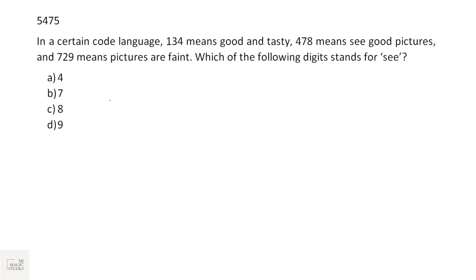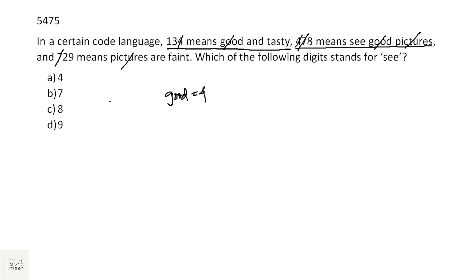In a certain code language, 1-3-4 means 'good and tasty', 4-7-8 means 'see good pictures'. We can see that 'good' is common and 4 is also common, so good = 4. Then 7-2-9 means 'pictures are faint' — 'pictures' is common and 7 is also common, so pictures = 7. Which of the following stands for 'see'? Only 8 is left, so 'see' stands for 8. Option C is the pick.